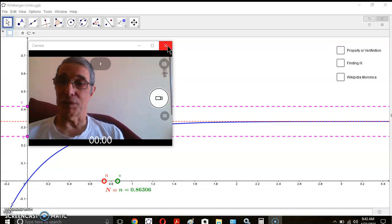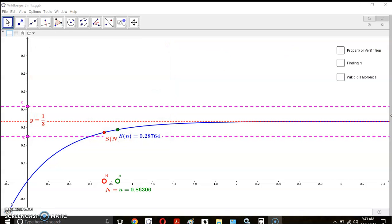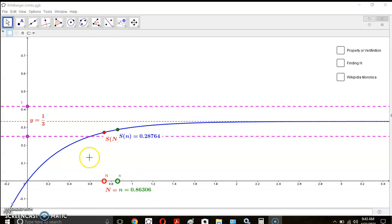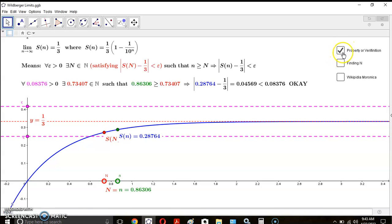Why even Wilberger doesn't actually understand the exact definition, and why he's right that it is very obfuscated and very flawed. Let's begin. Let's take this function, which is given by this blue curve here: S(n) is equal to one-third times one minus ten to the minus n. So this function is asymptotic to the line y equals one-third, as you can see, this red dotted line.